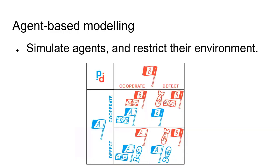Another form of simulation is agent-based modeling. In agent-based modeling, we simulate individual agents and restrict the things they can do within an environment. One such example is the famously known prisoner's dilemma, where two prisoners are given the option to shorten their sentence in exchange for betraying their partner in crime. If both prisoners talk, both will get longer sentences; if one talks and not the other, the talking one gets a shorter sentence; and if neither talk, both prisoners might benefit. There's a fantastic website called 'The Evolution of Trust' that visualizes this way better and covers the strategies different agents might adopt.